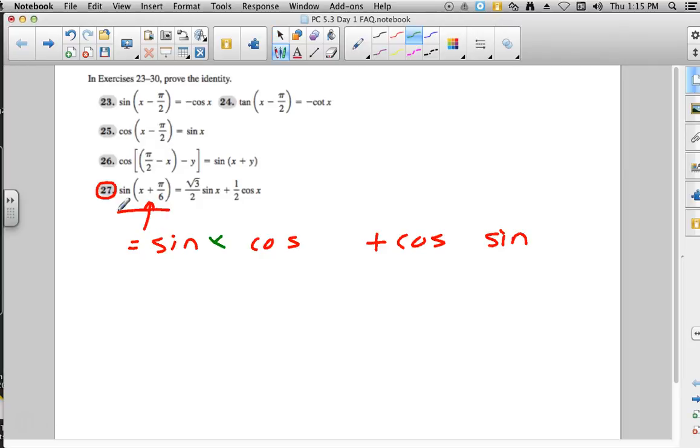Now we need to do this for x and pi over 6. And pi over 6 happens to be 30 degrees, so the easiest way to get what you need for that would just be to quickly draw that right triangle, 30, 60, 90 right triangle.